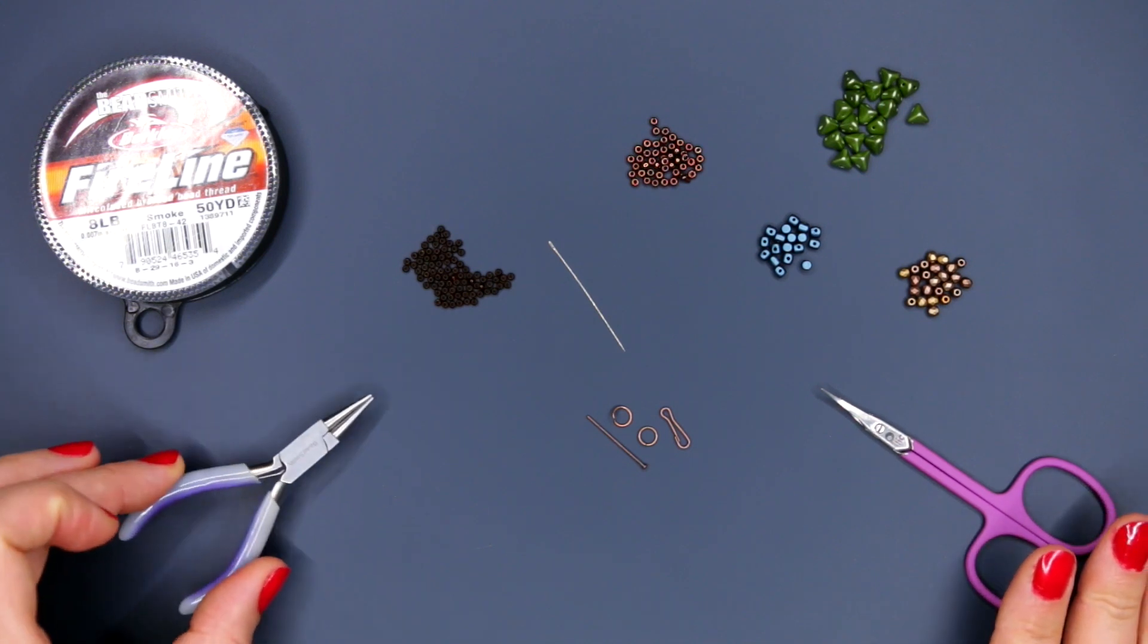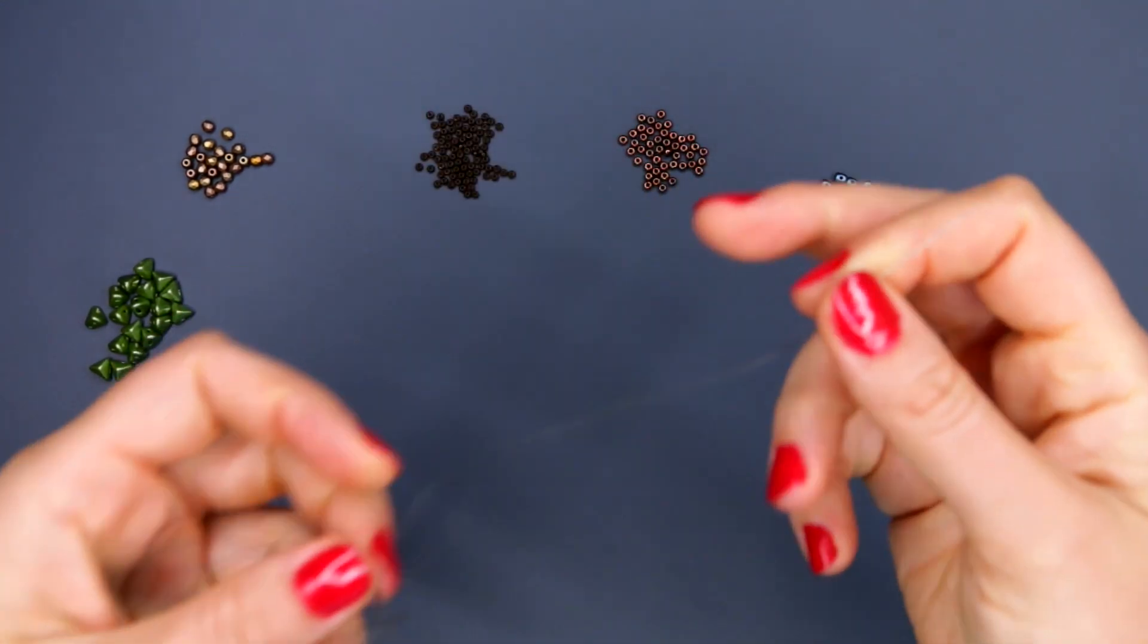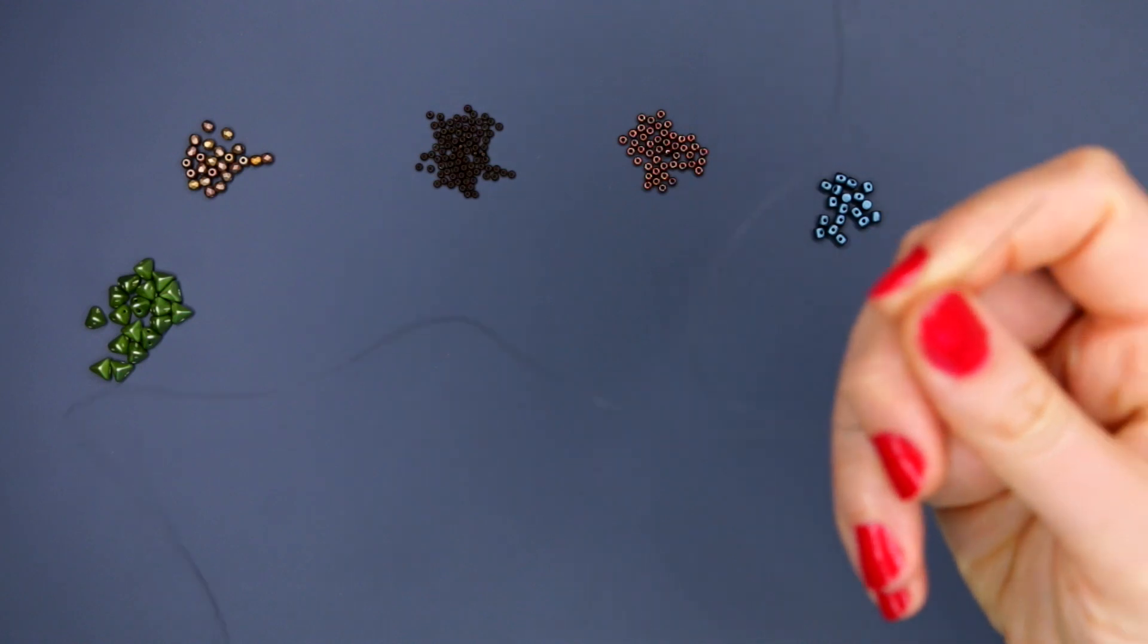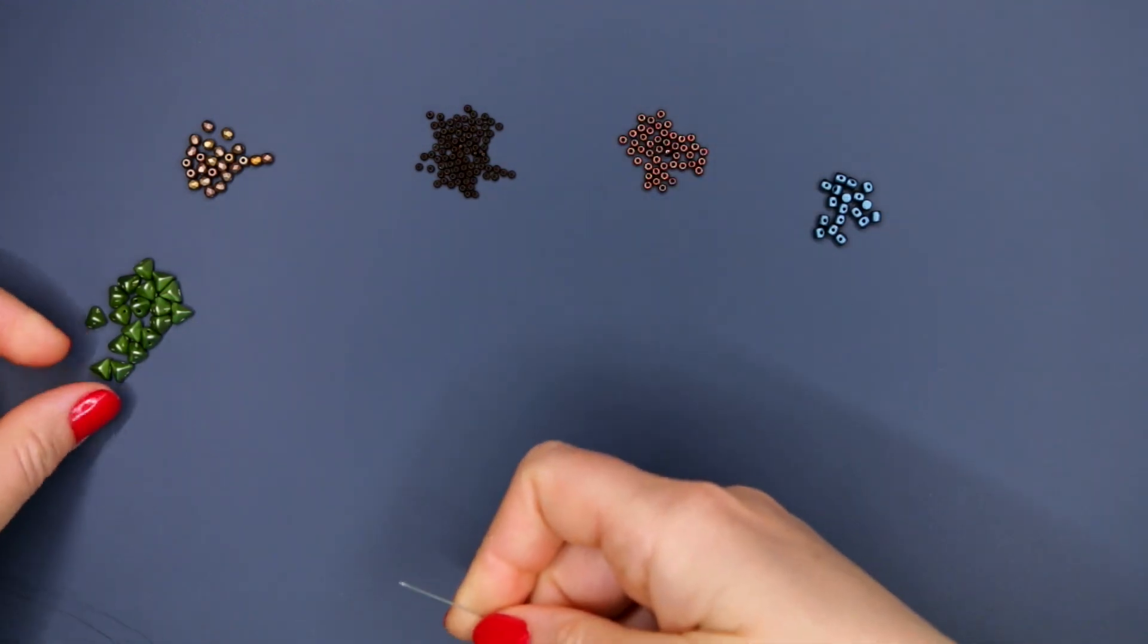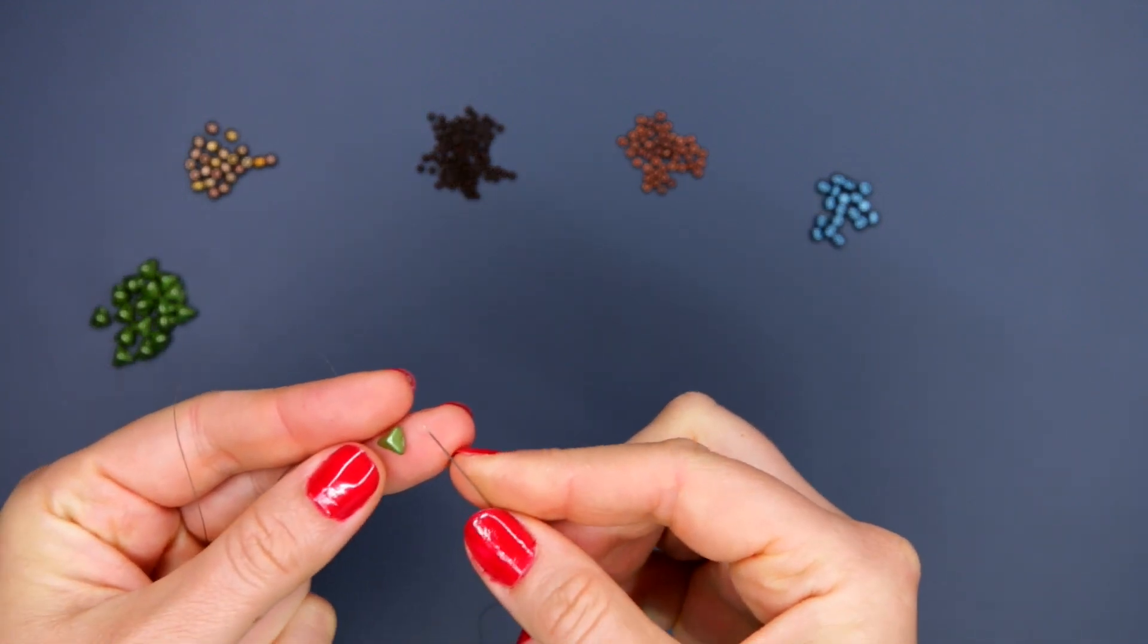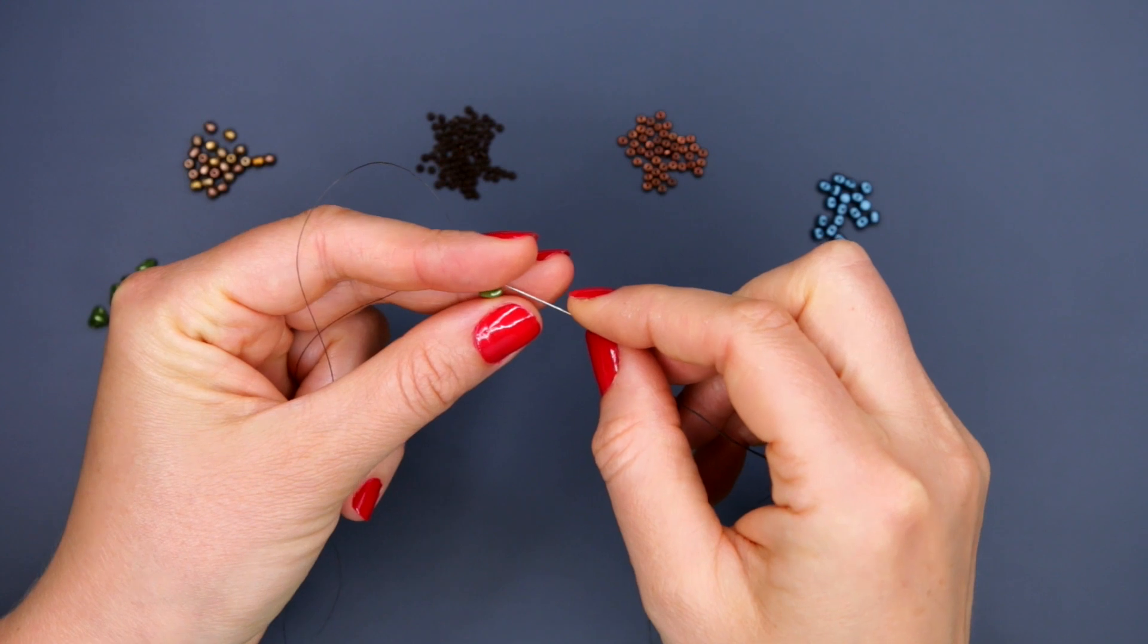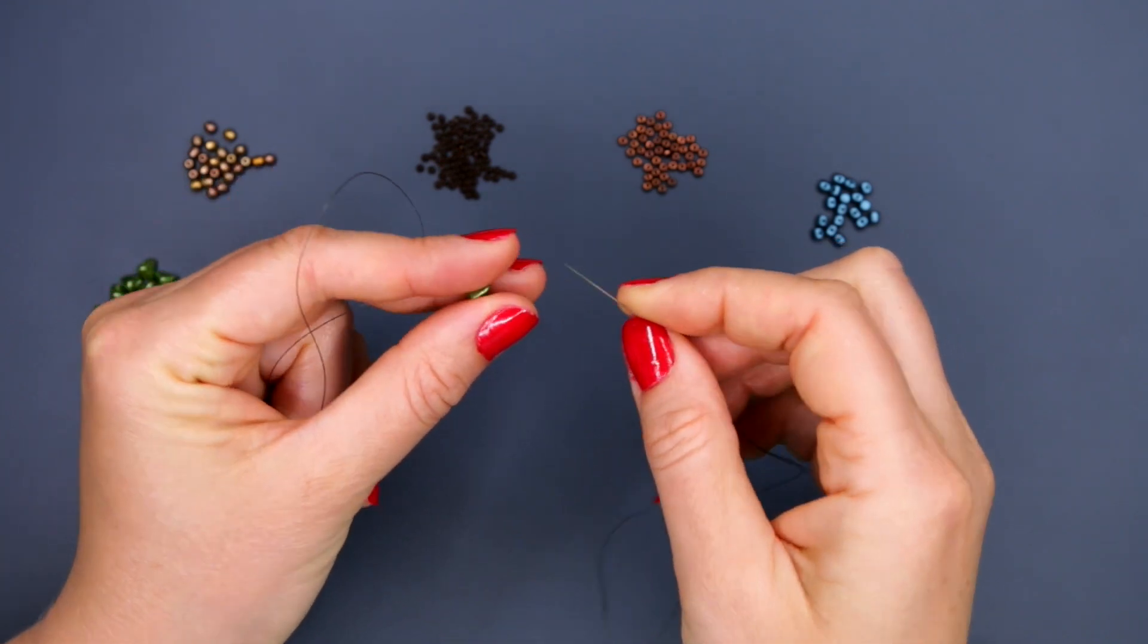All materials you can purchase on scarabiz.com. Let's take cut of fire line around 2 meters. We will work with both ends in rotation. Take a triangle keops Papuka. This bead has two holes in the base. Place the bead base upwards and go with the needle through the left hole from the side towards the base.